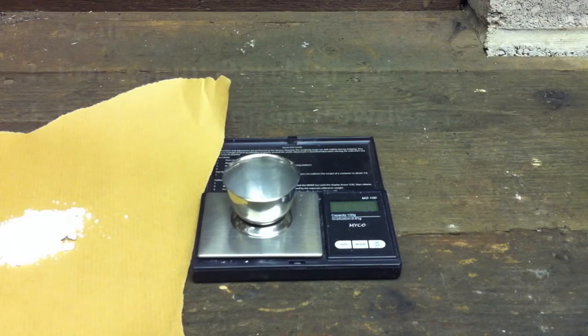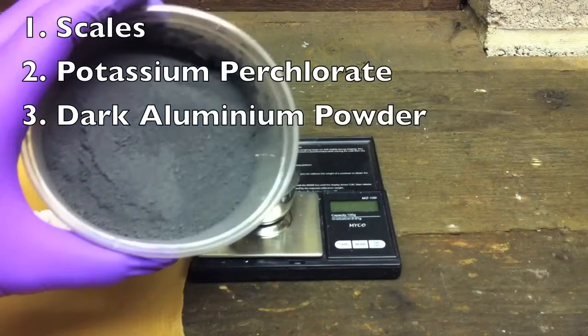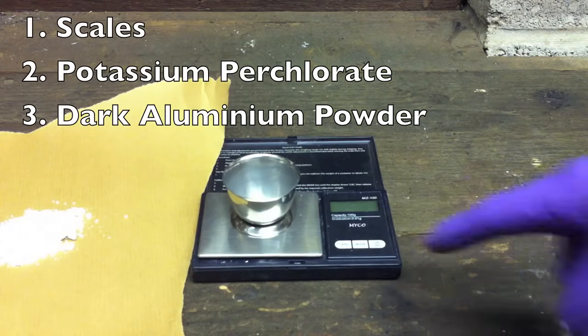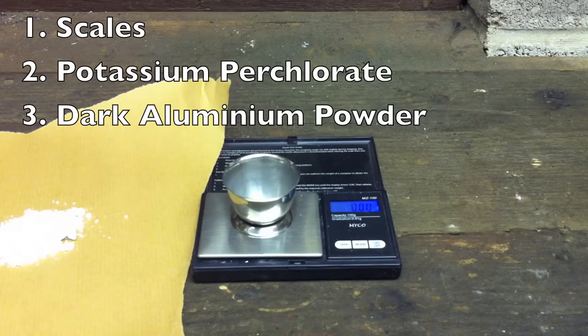The best type of aluminum powder to use is dark aluminum powder, which is very fine. The finer the better. You want the aluminum to be as fine as possible.